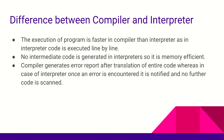Compilers do not generate any intermediate code, so they are memory efficient. Interpreters require extra memory to store the intermediate code. Another difference is that a compiler analyzes the entire code in a single go and generates a full error report, whereas an interpreter goes step by step, and at any line where it encounters an issue, it stops and notifies you without scanning the remaining lines.